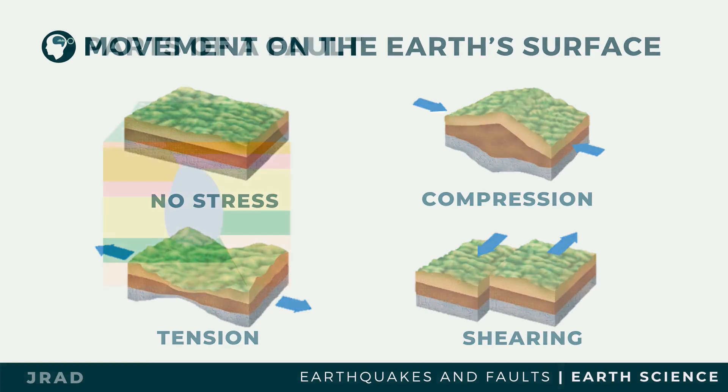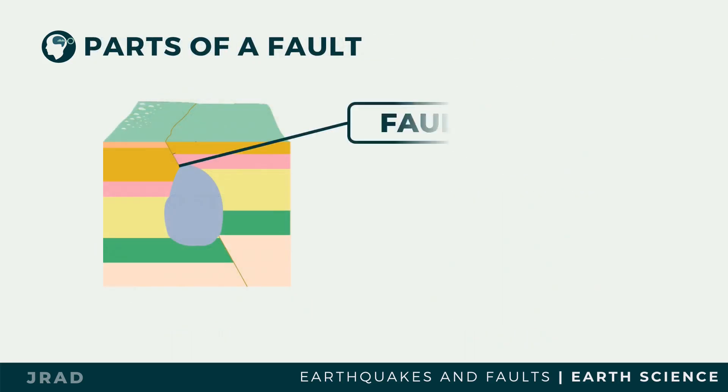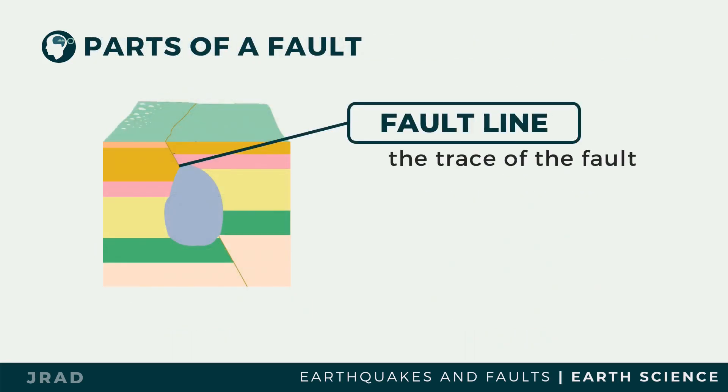A fault line is known as the trace of a fault and is the most visible part of a fault. However, as the fault cuts through the layer of soil, some parts may not be readily identified unless one cuts across the layer of the soil.